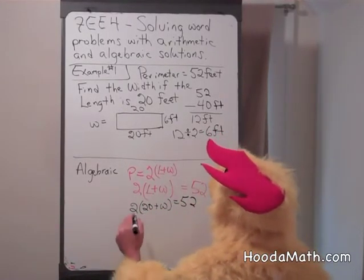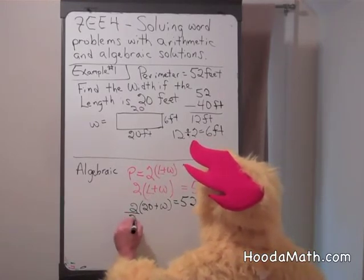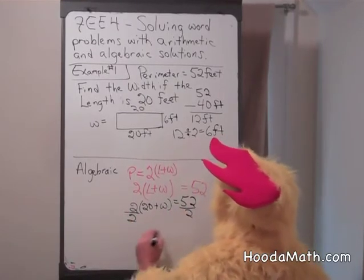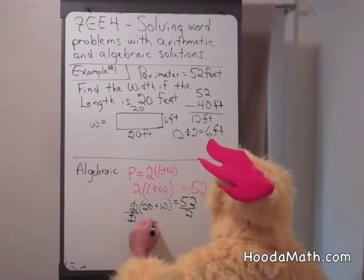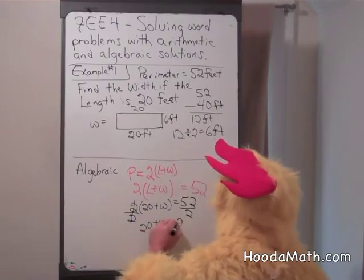we can divide both sides by 2, and we're going to get 20, this will become 1, 20 plus W equals 26.